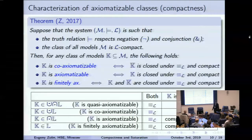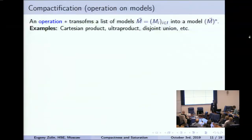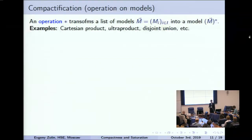This can be summarized in a quite symmetric table. But definability theorems are usually formulated in terms of closure under some relations and operations. So far we don't have any operations, so let us introduce the notion of a compactification operation. We consider operations on models — an operation takes some list of models M_i and returns a new model. For example, Cartesian product of groups or fields, ultraproduct, or disjoint union in modal logic.